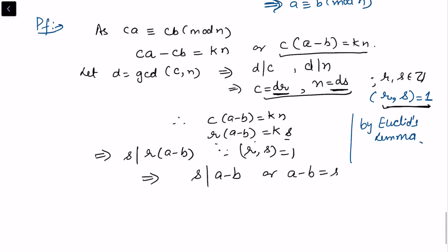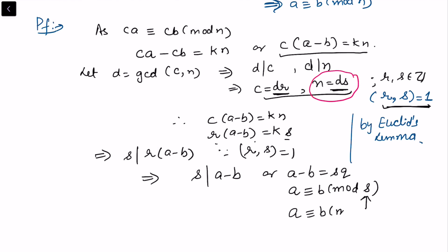Since s divides (a minus b), we can write a minus b equals s times q for some integer q, or equivalently, a is congruent to b modulo s. Since s = n/d, this gives us a is congruent to b modulo n/d, which is exactly what we desired to prove.